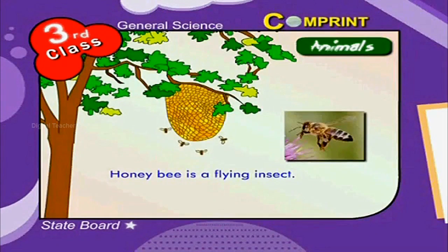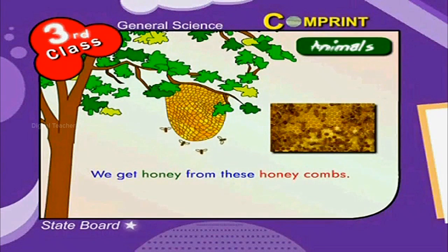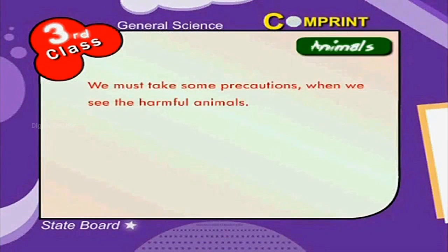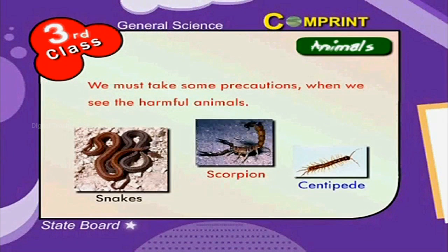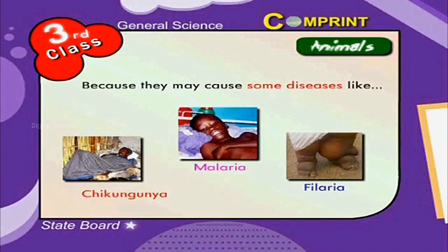The honey bee is a flying insect. These bees make honeycombs to live in and we get honey from these honeycombs. The spider spins a cobweb, which helps to catch insects. We must take precautions when we see harmful animals such as snakes, scorpions or centipedes, and also from mosquitoes and flies, because they may cause diseases like malaria, filaria or chikungunya.